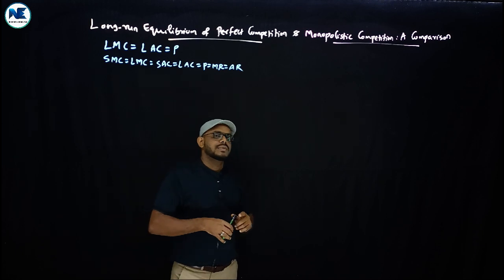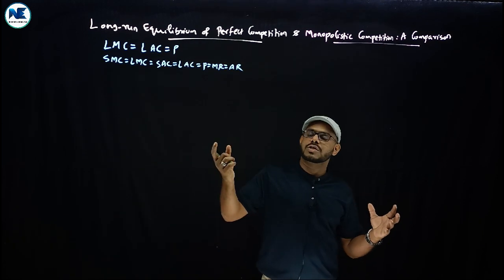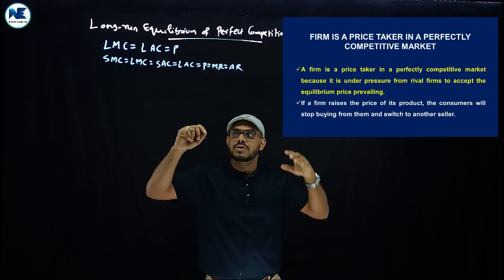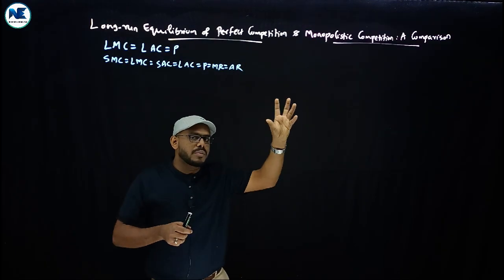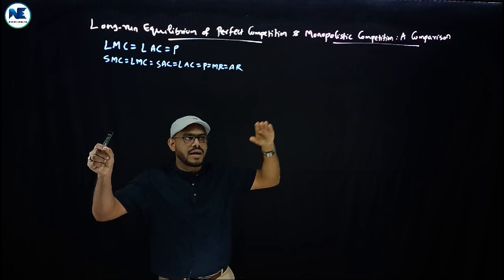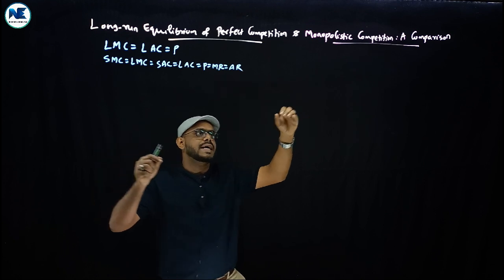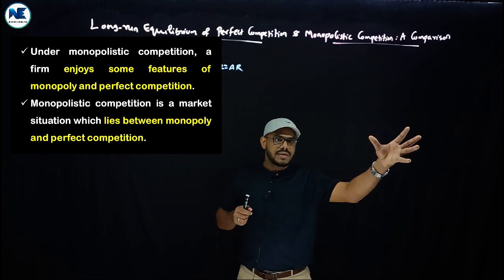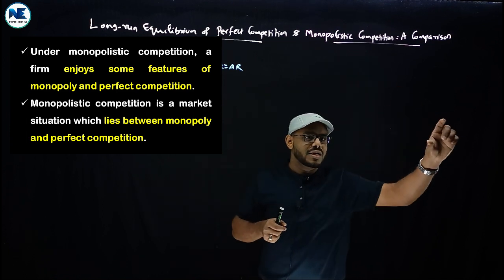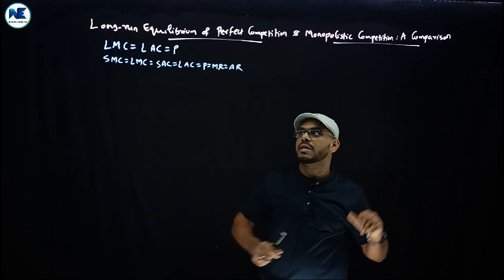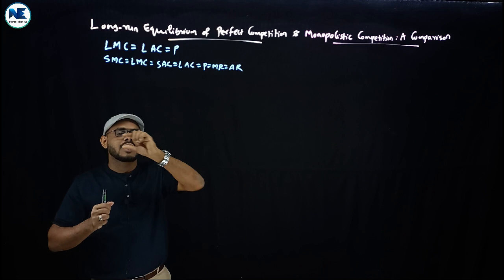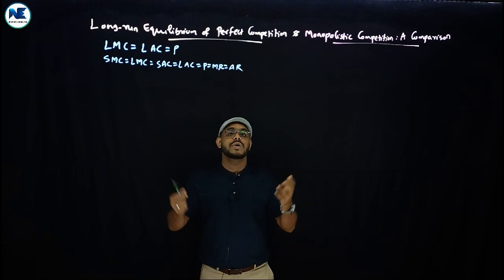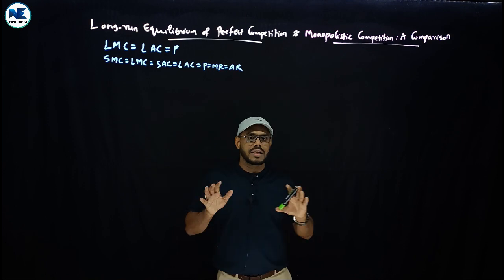Under perfect competition we know: homogeneous product, uniform price, perfect knowledge, and free entry and exit. Monopolistic competition is a combination of both monopoly and perfect competition — it has features of both. It has differentiated products and selling costs, with a downward sloping demand curve and marginal revenue curve, while under perfect competition the AR and MR form a horizontal straight line. Cost curves like average total cost, marginal cost, and average variable cost are U-shaped.